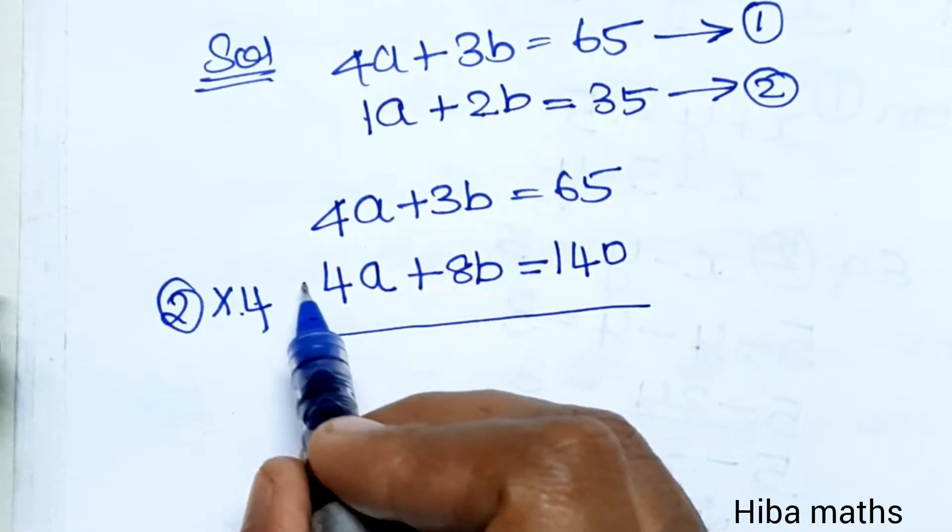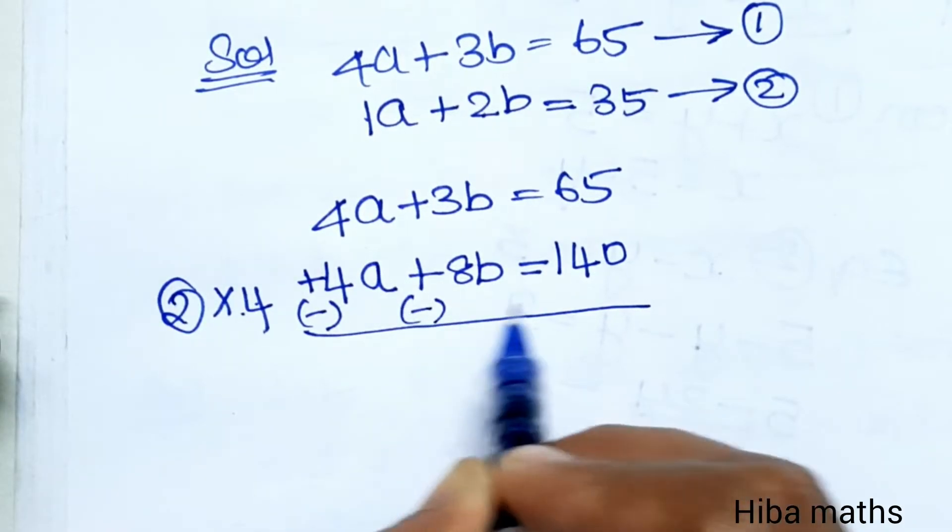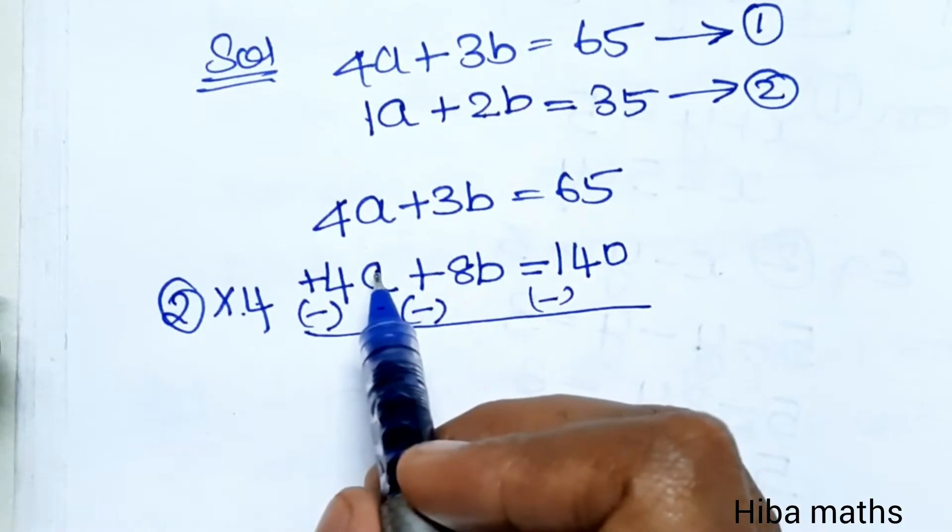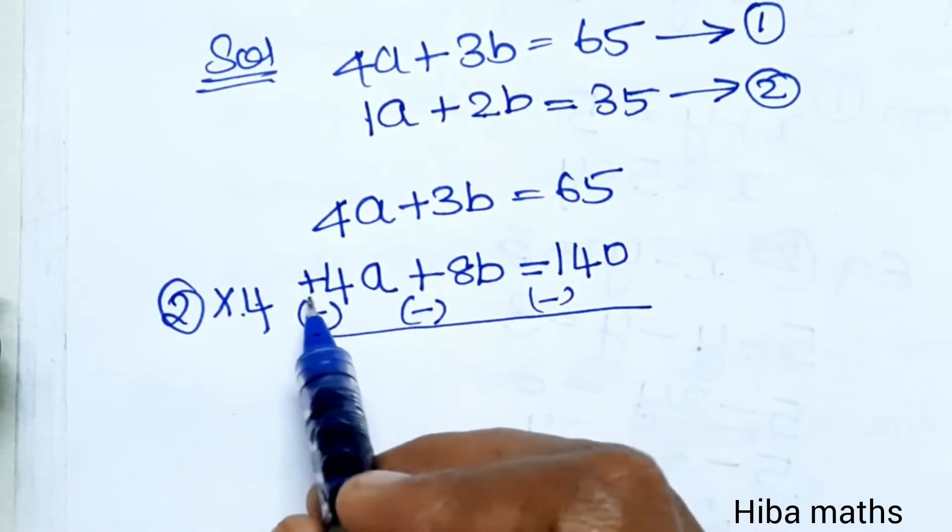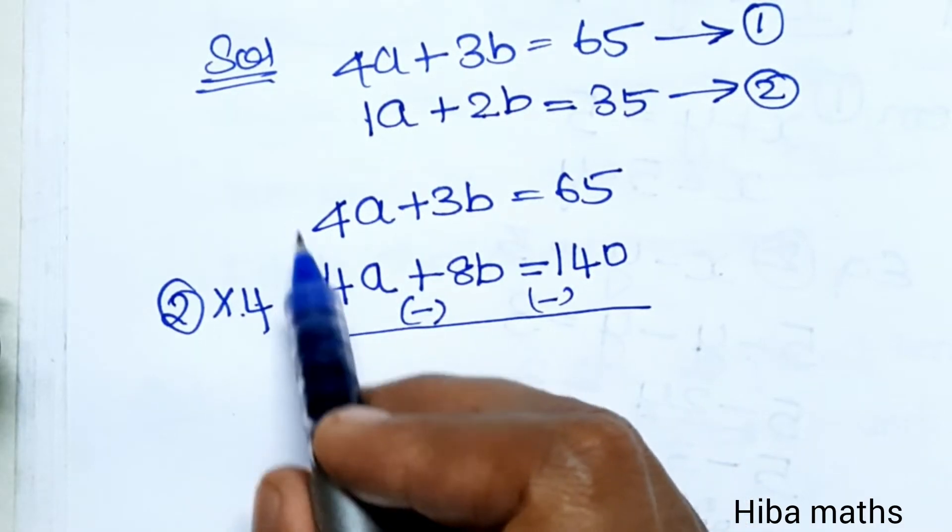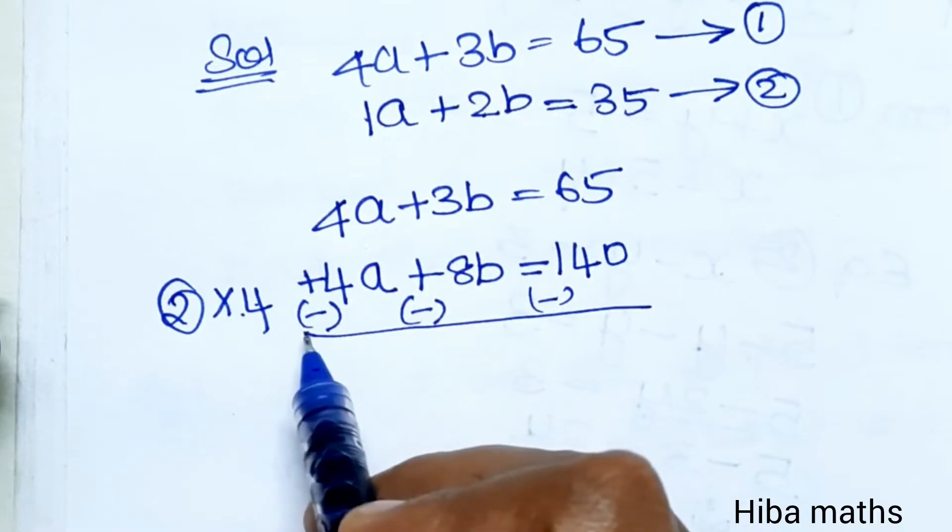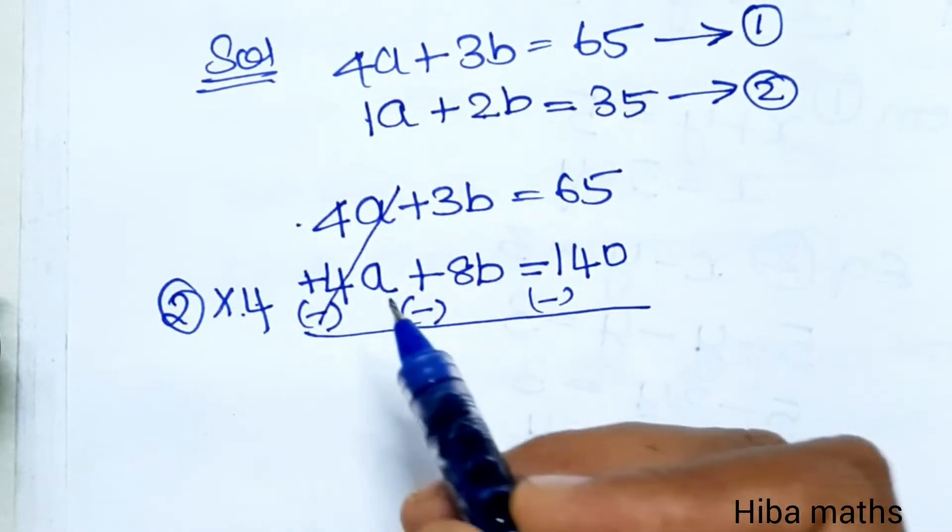Now we have 4a plus 3b equals 65 and 4a plus 8b equals 140. The a coefficients are equal. Plus minus equals minus. When changing signs, plus becomes minus. 4a minus 4a cancels.